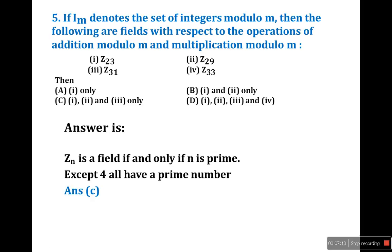The question looks lengthy but the answer is very simple using the shortcut: Z_n is a field if and only if n is prime.